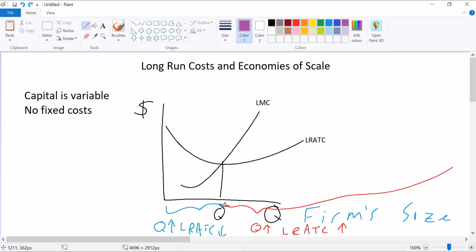Firms in this range have the lowest possible costs. And we call this quantity that's associated with the lowest possible cost minimum efficient scale. It's the scale of your business that has the minimum costs. It's the most efficient in this production process.